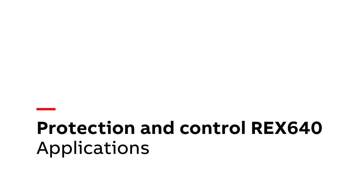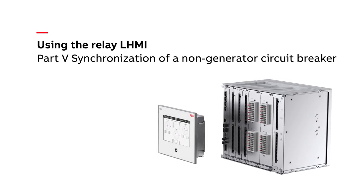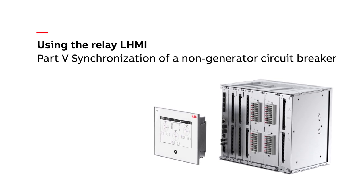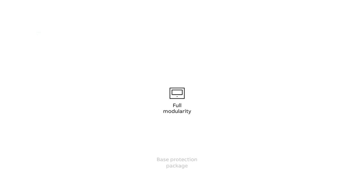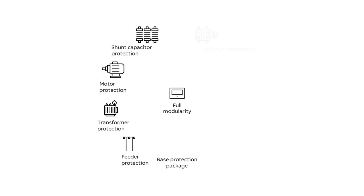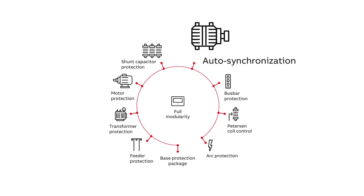Welcome to our short overview of how to synchronize a non-generator circuit breaker, such as a bus sectionalizer or grid incomer, with our user-friendly REC640 protection and control relay. REC640 can handle two different synchronizing scenarios. In this video, we will focus on synchronizing a non-generator circuit breaker. The precondition for using REC640 for non-generator circuit breaker synchronization is that the generator synchronization is also managed by the REC640 relay.